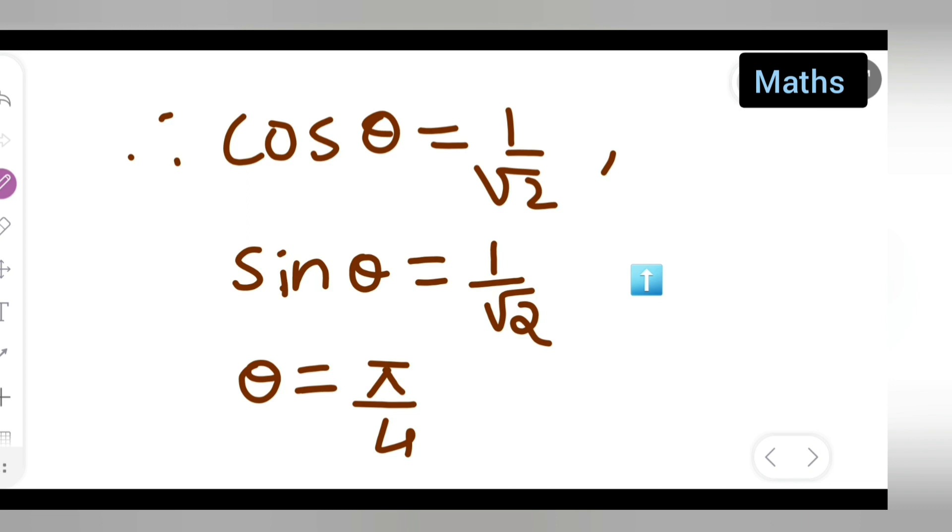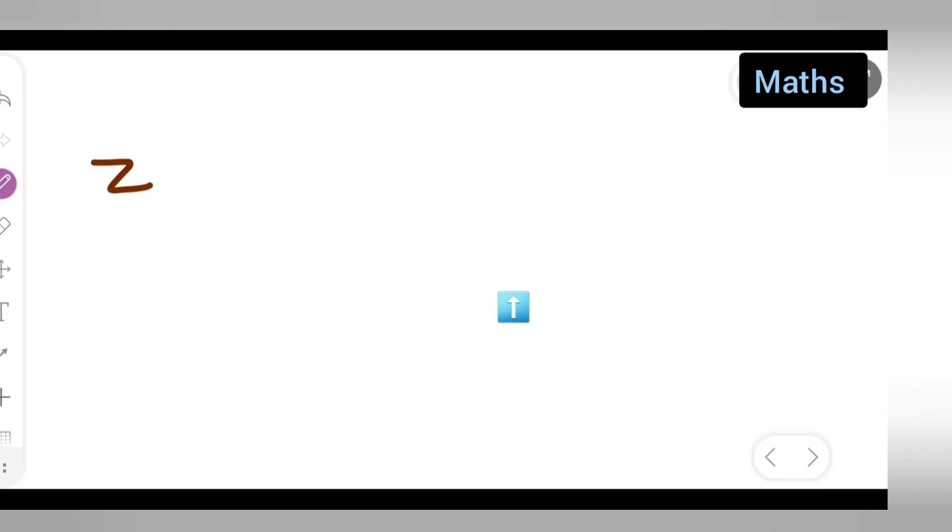So you can say that z is equal to 2 root 2 into cos of pi by 4 plus i sin of pi by 4.